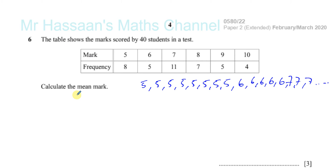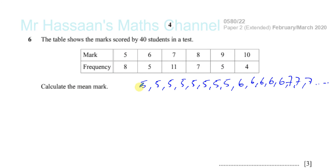When we're finding the mean, the mean is the sum of all the entries divided by the number of entries. So if we were to list all of these numbers down — the eleven sevens, the seven eights, the five nines, and the four tens — we would have written down altogether forty numbers. That's what the frequencies add up to: that's 8+5+11+7+5+4, which gives you forty. The number of entries is forty, and the sum of all the entries is what we need to find and divide by forty.